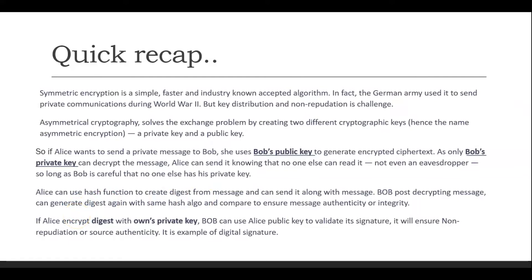The last concept — very important and used again and again in this lecture — is the digital signature, or source authenticity. Here the sender's private key plays a role. Alice uses the digest from the hash function and encrypts it with her private key, then sends it to Bob. Bob uses Alice's public key to validate the signature. How Bob gets Alice's public key is something we will cover in this lecture — specifically, how each party accesses the other's public key.